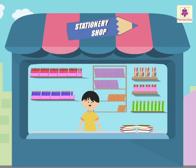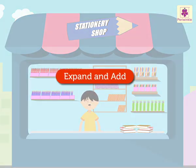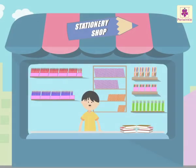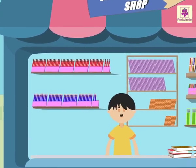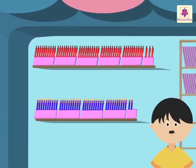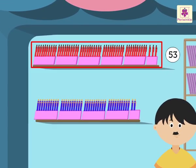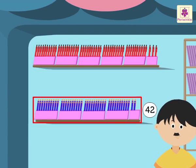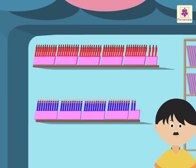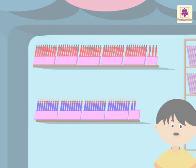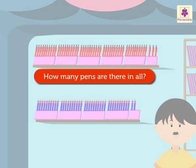Hello kids! Today let us learn to expand and add numbers at Uncle Sam's stationery shop. Hey look, Uncle Sam has 53 red pens and 42 blue pens in his shop. Let us find out how many pens are there in all.